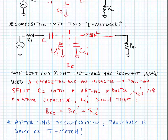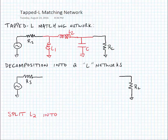After this decomposition, our procedure is the same as the T matching procedure. We can also envision a tapped L matching network where we tap at a common point between inductors L1 and L2, drawn here as a pi network. We decompose this into two L networks using the same virtual technique used with the tapped C match.